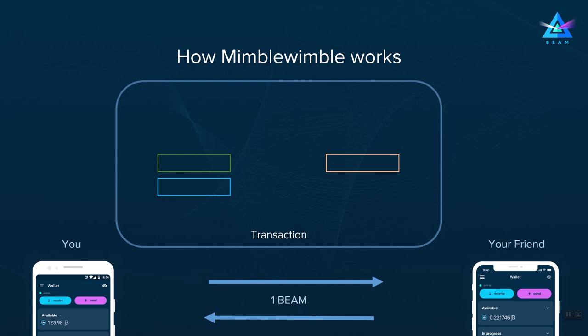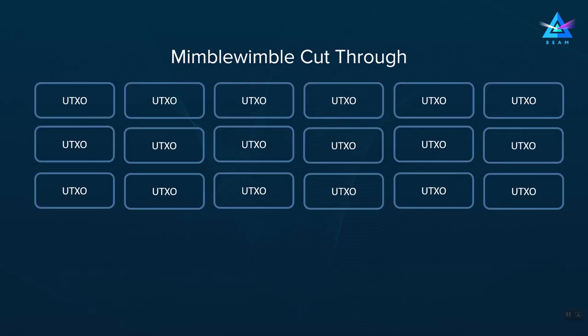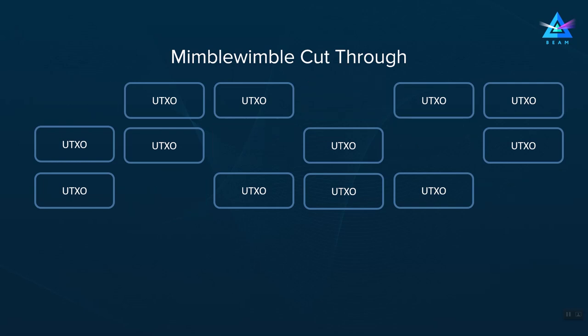In fact, the entire concept of the transaction in MimbleWimble is ephemeral, and all you can see when you look at the block is just lists of inputs and outputs. As for blockchain size, MimbleWimble also provides a unique and elegant solution. By structuring the UTXOs in a specific way, MimbleWimble allows discarding spent UTXOs while still being able to validate the entire blockchain from the beginning to the last block.